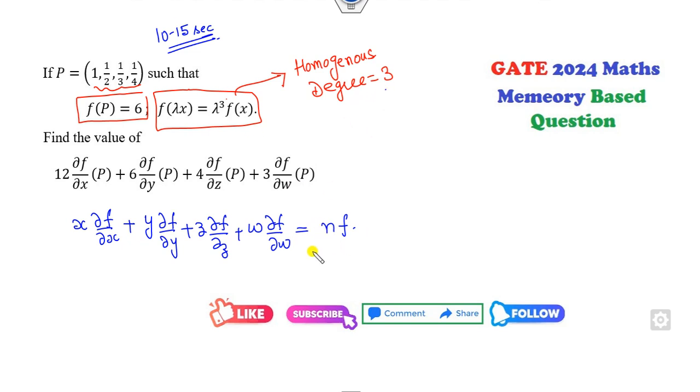Now, what is n? n is the degree, so this is basically 3f. Now you have to target the point p. What is the value at point p? What is the value of x at point p? 1. This is del f upon del x at point p plus y, y is half, del f upon del y at point p plus 1 over 3 del f upon del z at point p plus 1 over 4 del f upon del w at point p, which equals n into f. What is f at point p? 3 into 6.